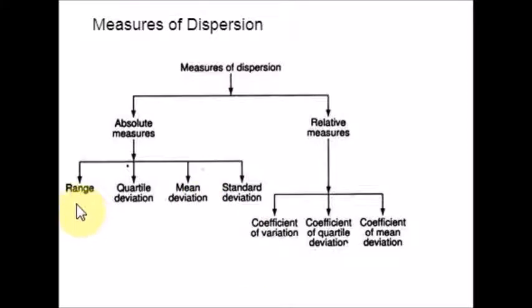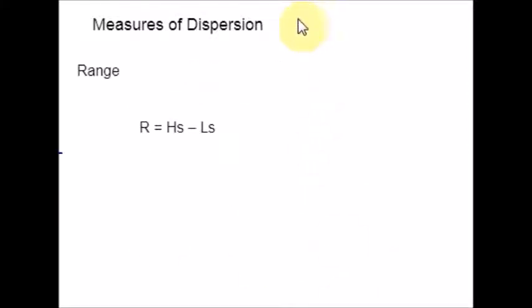First, we are going to start with Range. Range is nothing but the interval between the highest score and the lowest score. Range is a measure of variability or scatteredness of the variates or observations among themselves. Range does not give an idea about the spread of observations around some central value. It is just the difference between highest score and lowest score. R = Hs - Ls, where R is Range, Hs is highest score, and Ls is lowest score.